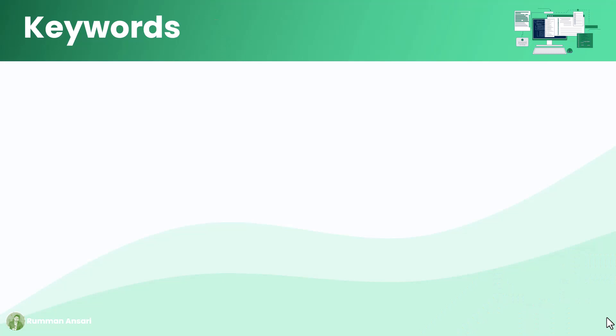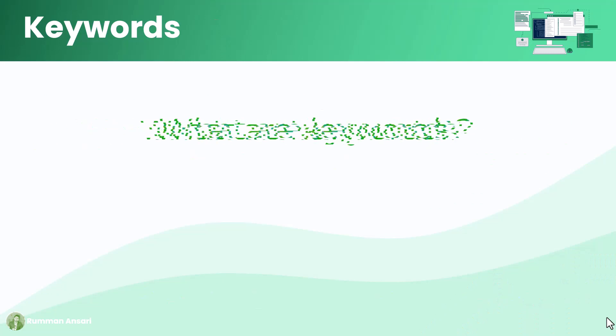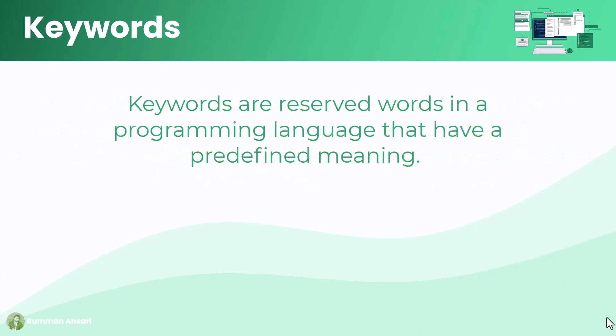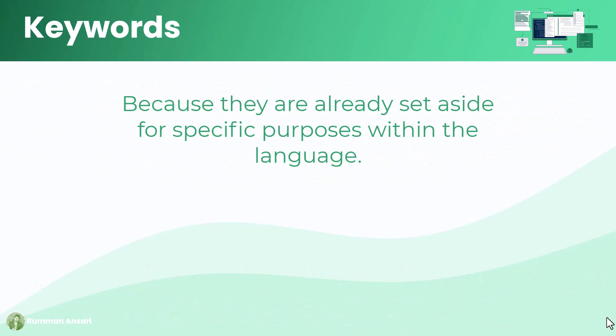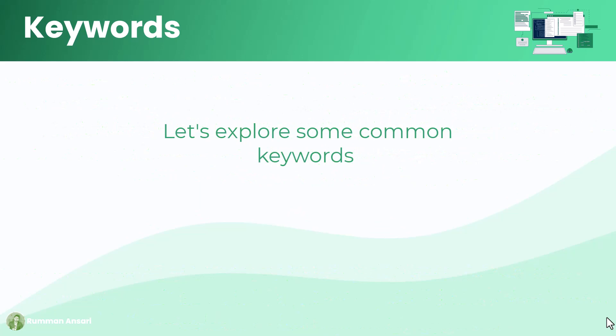First things first, what are keywords? Keywords are reserved words in a programming language that have a predefined meaning. They cannot be used as an identifier. An identifier, as we already discussed, is the name of variables, functions, class names, or other elements that you can define yourself. Keywords cannot be used as identifiers because they are already set aside for specific purposes within the language.